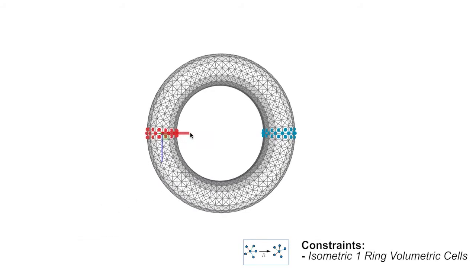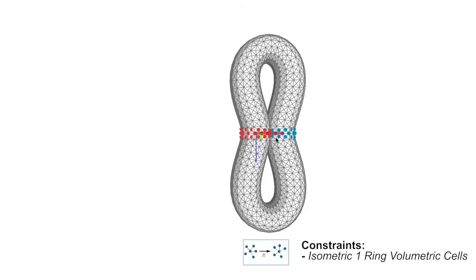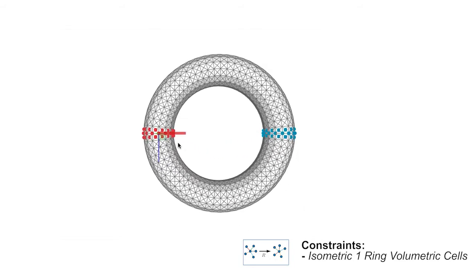Rigid constraints can also be prescribed on tetrahedral cells or one-rings. This enables natural deformations with local volume preservation.